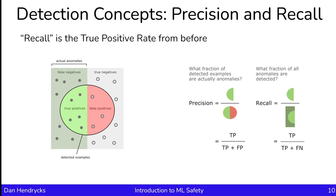Before discussing our next anomaly detection metric, we'll need to touch on the background concepts of precision and recall. Recall is the true positive rate—the fraction of all anomalies that are detected, or true positives over true positives plus false negatives. Precision is what fraction of detected examples are actually anomalies—true positives over true positives plus false positives. To test your understanding, note that the boy who cried wolf could be described as a detector. He is a detector with high recall but low precision.